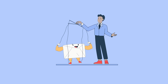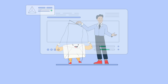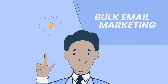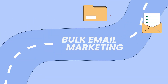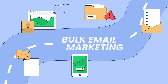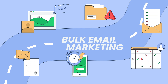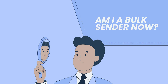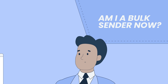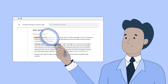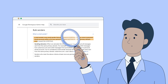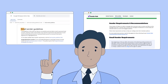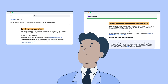Regardless of their type, bulk emails can't bring success unless you have a clear understanding of what you're doing and why. That's where bulk email marketing comes into play. It's a strategy and a detailed roadmap that defines the target audience, sets the timing, and outlines the content. Having a bulk email marketing strategy doesn't make you a bulk email sender automatically. According to Google, bulk senders are marketers who send 5,000 emails or more within 24 hours from a single domain, and that means they have to comply with bulk sender requirements from Google and Yahoo.